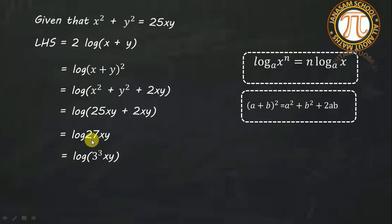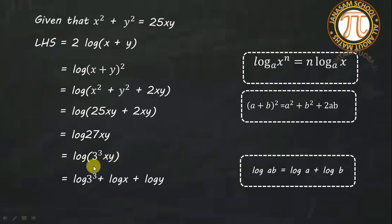27xy can be written as 27 is 3³. So log(3³xy). This is the logarithmic formula: log ab = log a + log b. Here we have log 3³ + log x + log y.